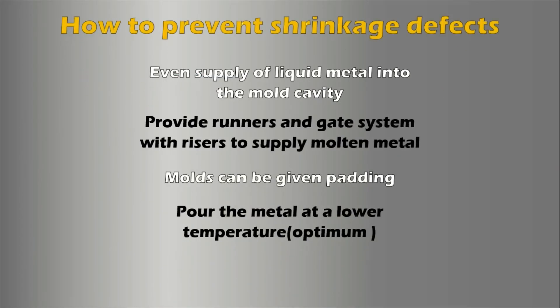To prevent shrinkage defects, ensure a continuous, even supply of liquid metal into the molds. This can be accomplished by using a runner and gate system with risers to supply the molten metal. Additionally, molds can be given padding which widens the ends of narrow pieces attached to thicker parts, helping ensure thicker sections get enough liquid metal before the thin part solidifies. Some manufacturers also place cooling ribs, cooling coils, or chills inside the molds to disperse heat faster. Pouring the metal at a lower temperature may also help.